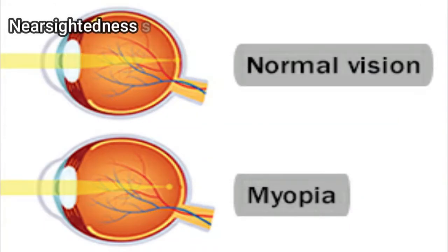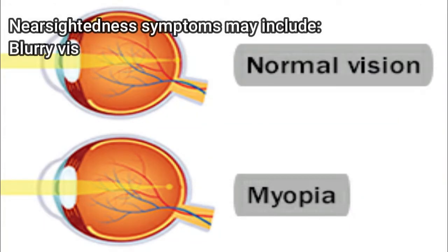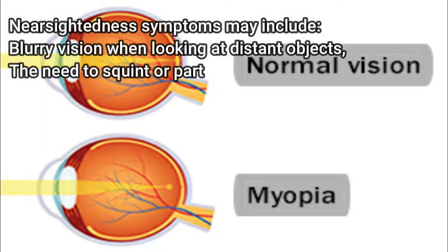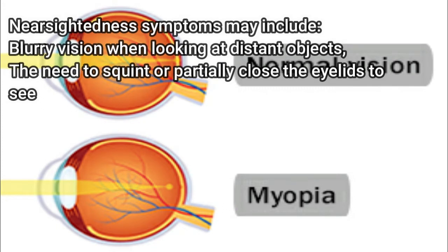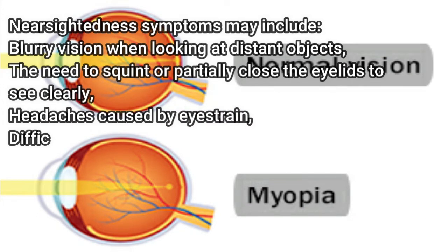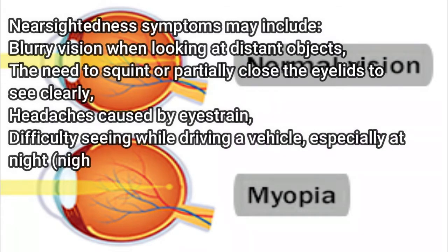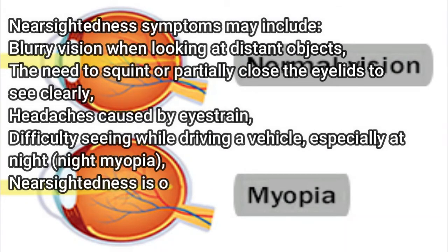Nearsightedness symptoms may include: blurry vision when looking at distant objects, the need to squint or partially close the eyelids to see clearly, headaches caused by eye strain, and difficulty seeing while driving a vehicle, especially at night — night myopia.